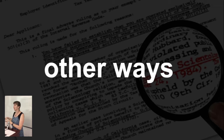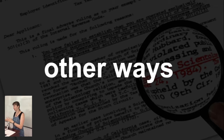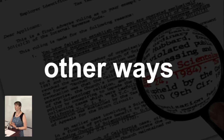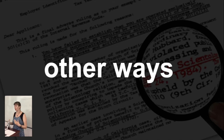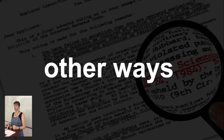Predatory journals still end up online and are still findable, so you can still come across articles from them. My answer is: people publish in those journals by mistake. Don't judge the article solely based on where it's published, but do engage with the literature, find out which journals are legitimate, and do your due diligence. If you think the article is good, you know what good articles look like.